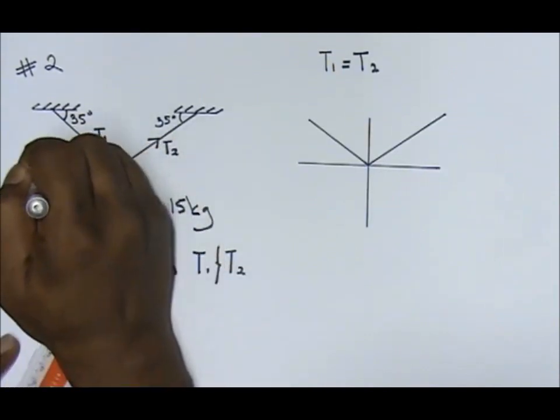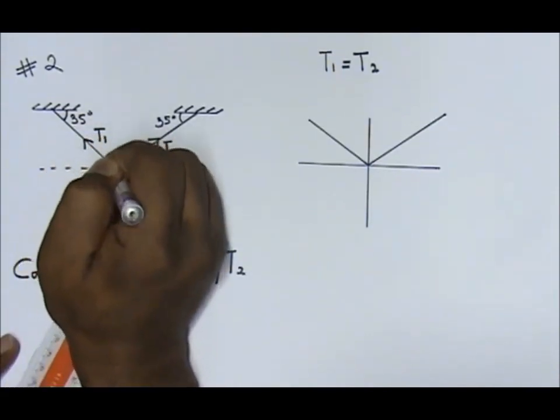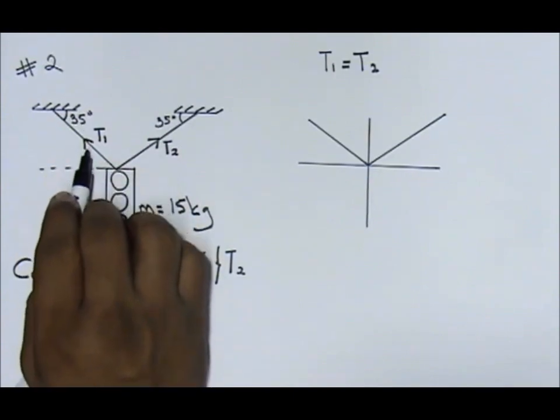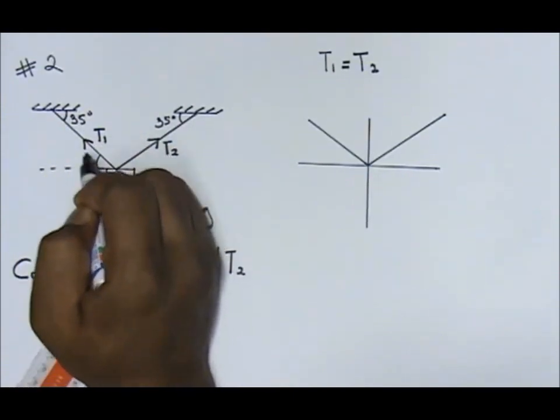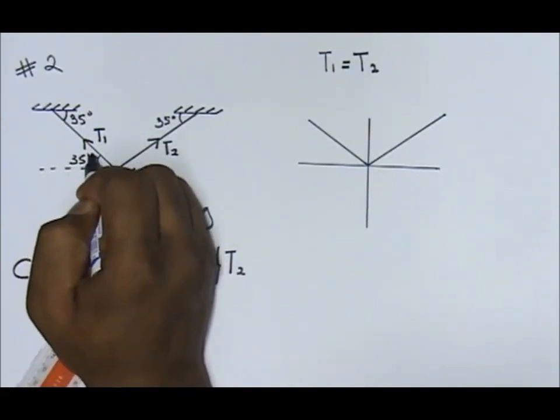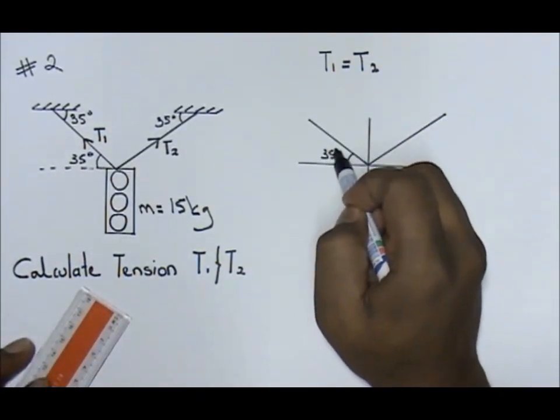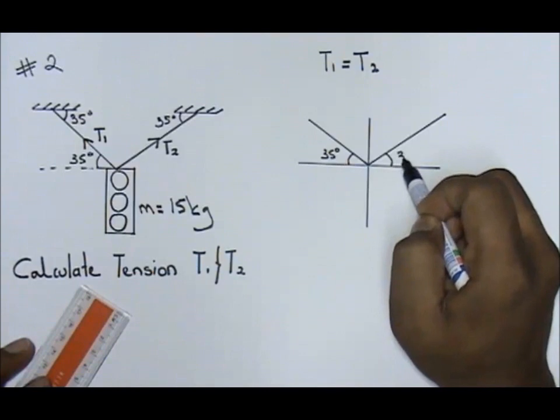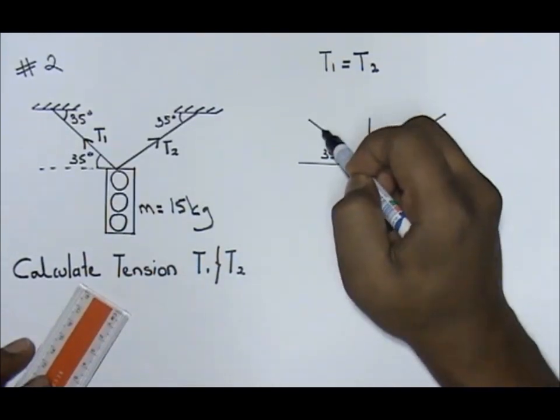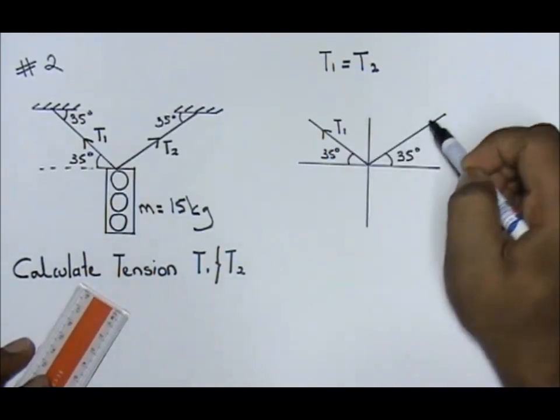This one here, if this is 35, this angle will also be 35. So 35 degrees, 35 degrees, this is your tension.